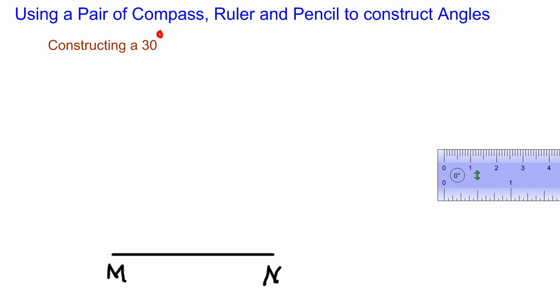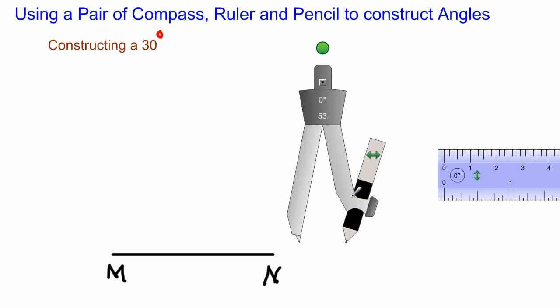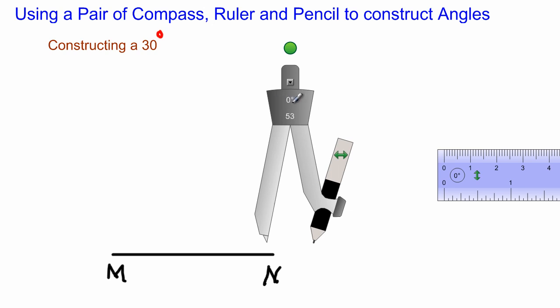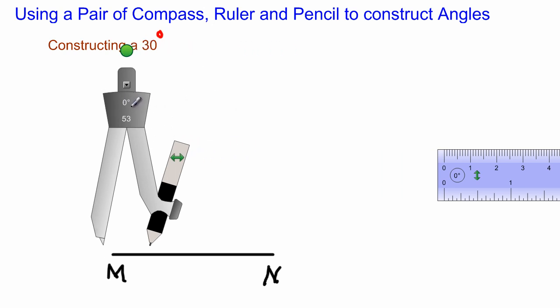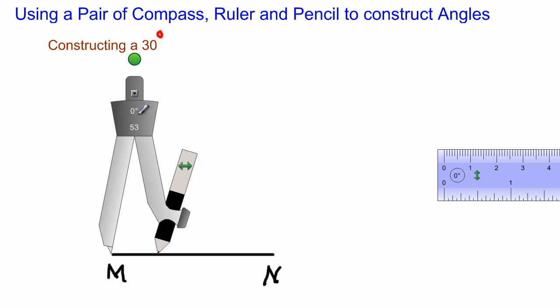Okay, now what I'll be doing again, I am going to use my compass, my pair of compass, to construct an angle of 30 degrees at the point M. So again, it doesn't matter how wide you open your compass. As I've always said, just try to maintain a very comfortable radius. All right, so I'm going to place it at the point where I need to construct it, at the point M. Okay, so let's place it there.